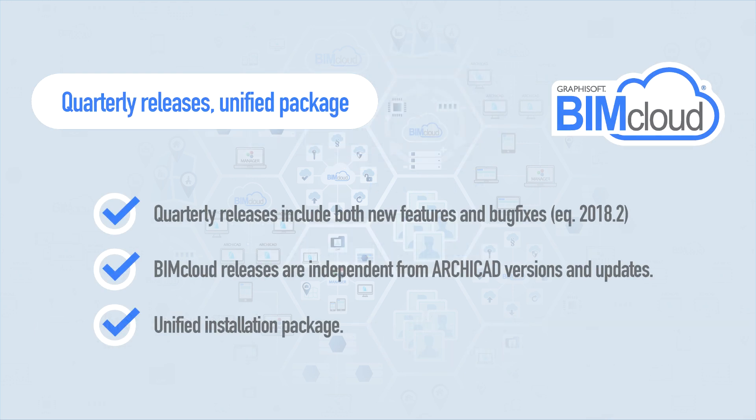BIMcloud will have quarterly releases. Such releases will feature both improvements and bug fixes. Release names will include year and release number — for example, 2018.1, 2018.2, and so on.